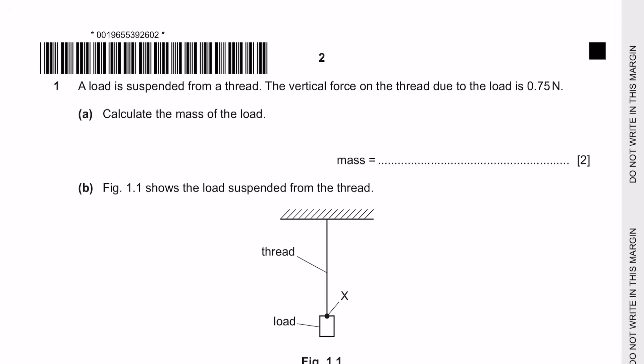Question 1. A load is suspended from a thread. The vertical force of the thread due to the load is 0.75 newtons. Vertical force means the force is acting downwards, so the force acting downwards is the weight.